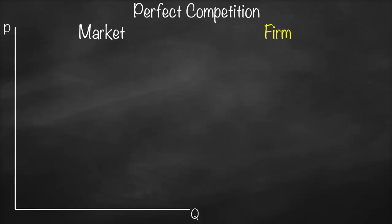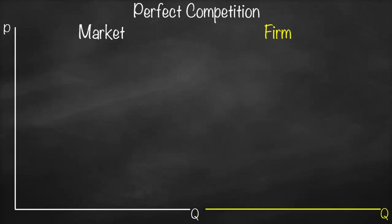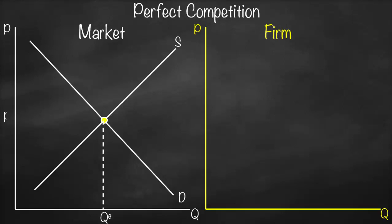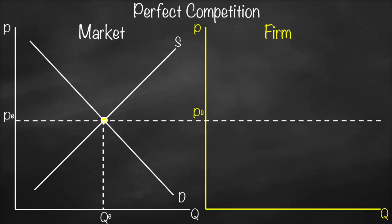The x-axis is quantity and the y-axis is price, the same for my firm. In the market, we have our downward-sloped demand curve and our upward-sloped supply curve. The point of intersection between the demand curve and the supply curve gives the equilibrium point, where we get the equilibrium quantity and equilibrium price. I will take this equilibrium price horizontally across to the diagram of my firm.